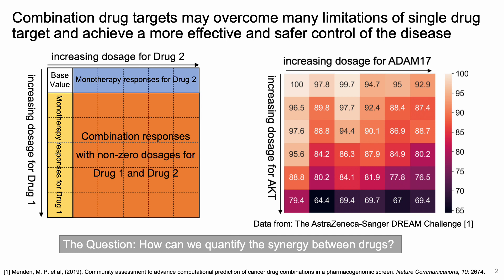We focus on the analysis of drug combinations due to its advantages compared to single drug targets. In this study, we work on the AstraZeneca Sanger Dream Challenge, which is a publicly available dataset containing 11.5K experimentally tested drug combinations measuring cell viability over drugs and cancer cell lines. In particular, we focus on the dose-response matrices in the pharmacological part of the dataset.